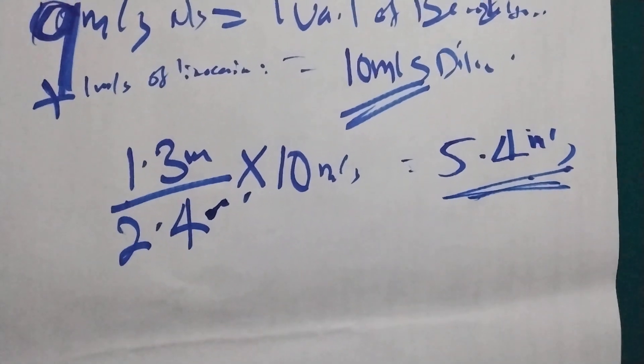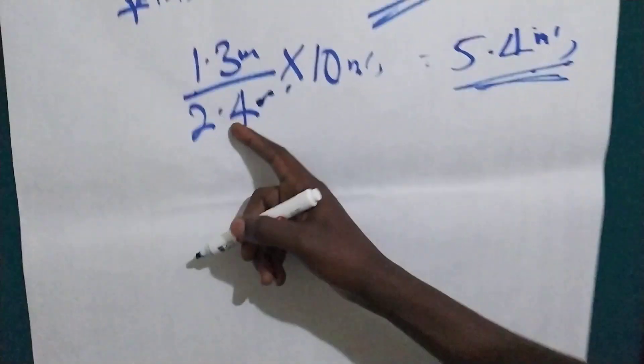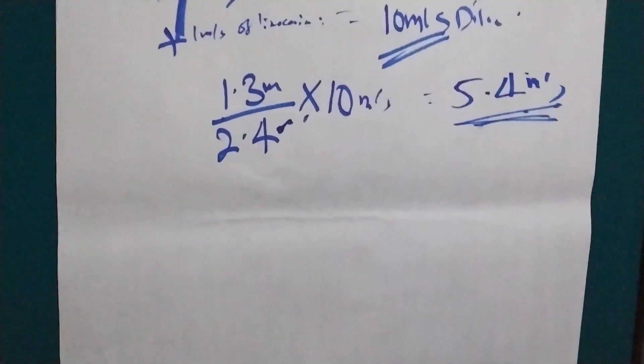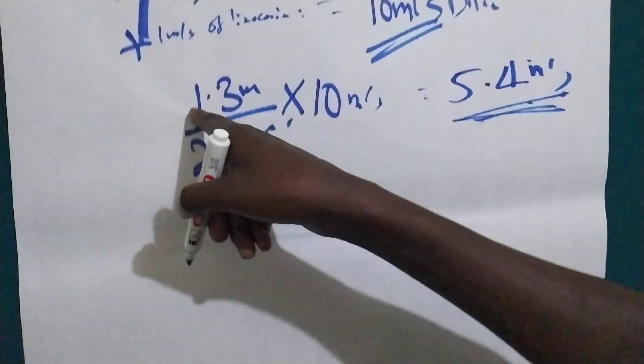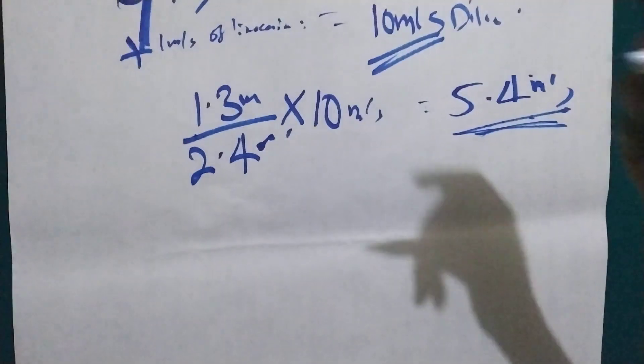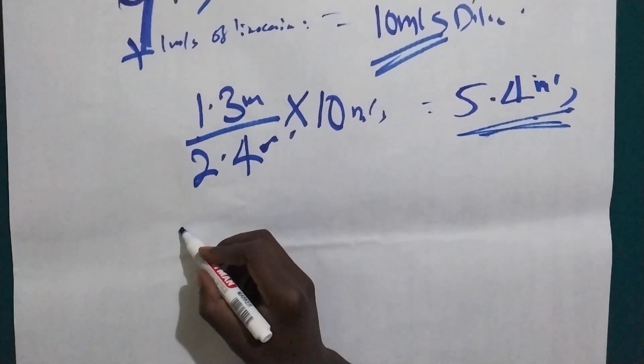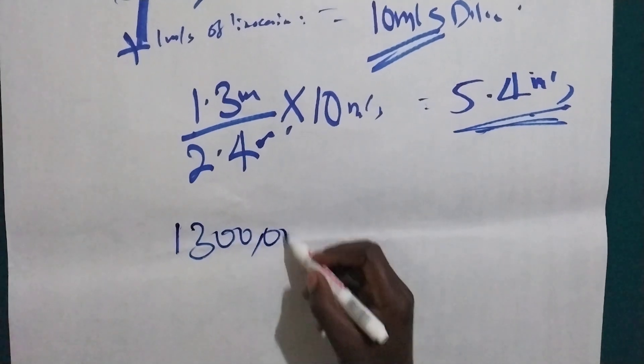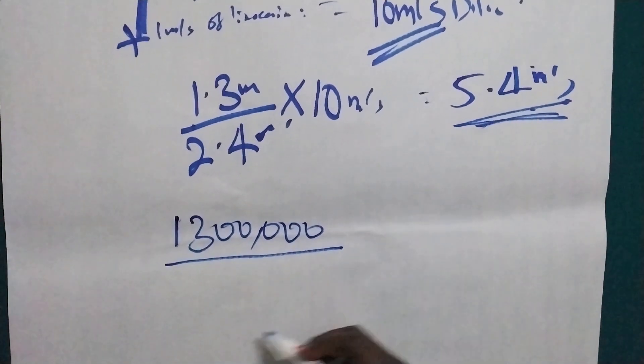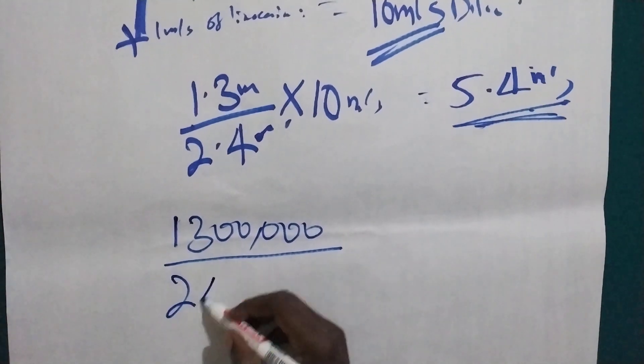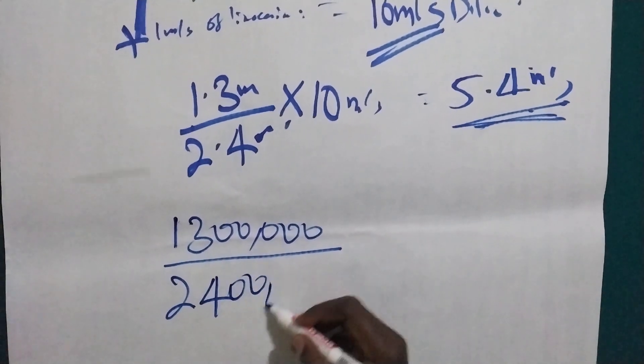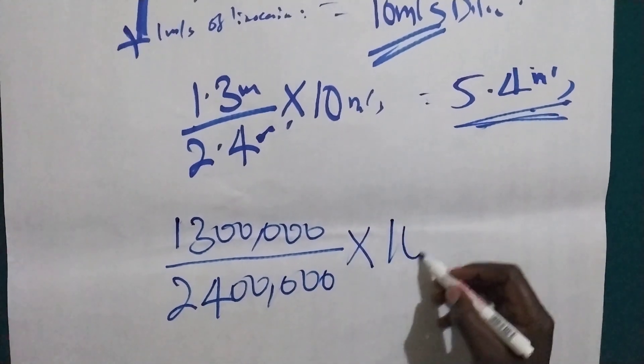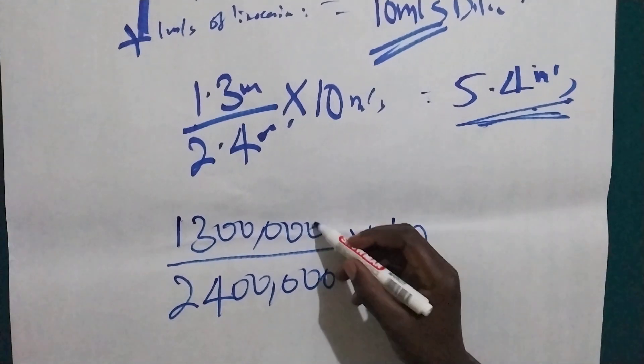How about if we use international unit? So international unit, this one is two million four hundred international unit. This one is one million three hundred international unit. So let's use one million three hundred thousand international unit times 10.